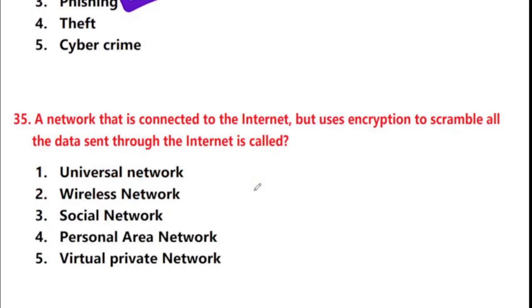Next question: a network that is connected to the internet but uses encryption to scramble all data sent through the internet is called — options: universal network, wireless network, social network, personal area network, virtual private network. Answer is option 5: Virtual Private Network.